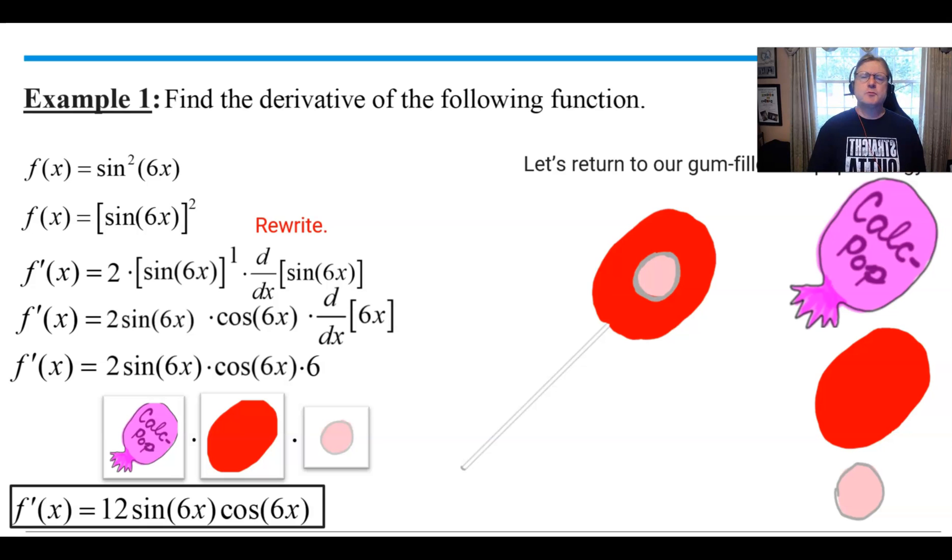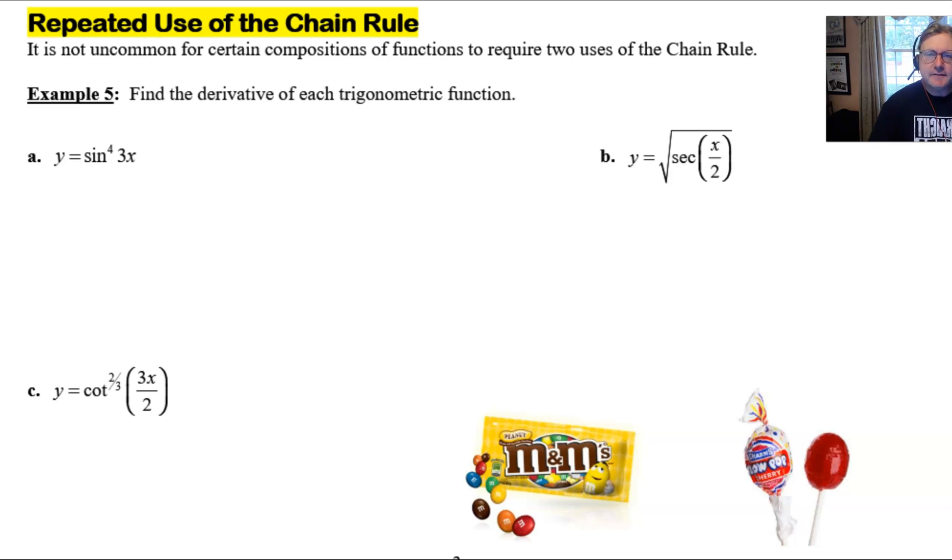Now we're going to take a look at the three problems that I have in the notes that use this same idea. So here we are with example 5, our repeated use of the chain rule. The directions are to find the derivative of each of these trigonometric functions.